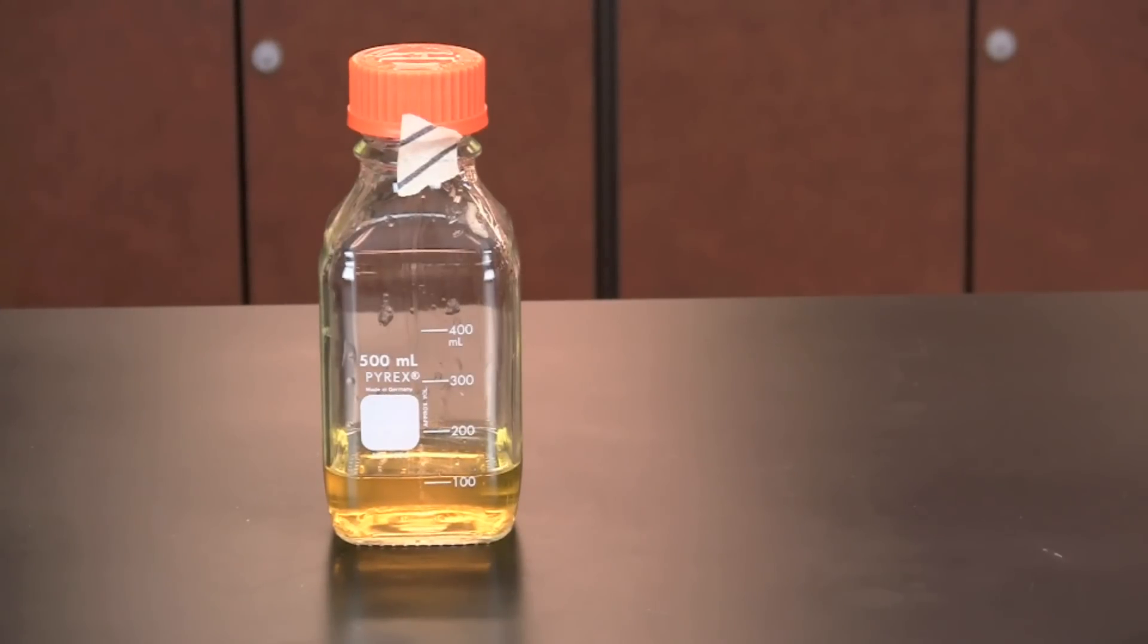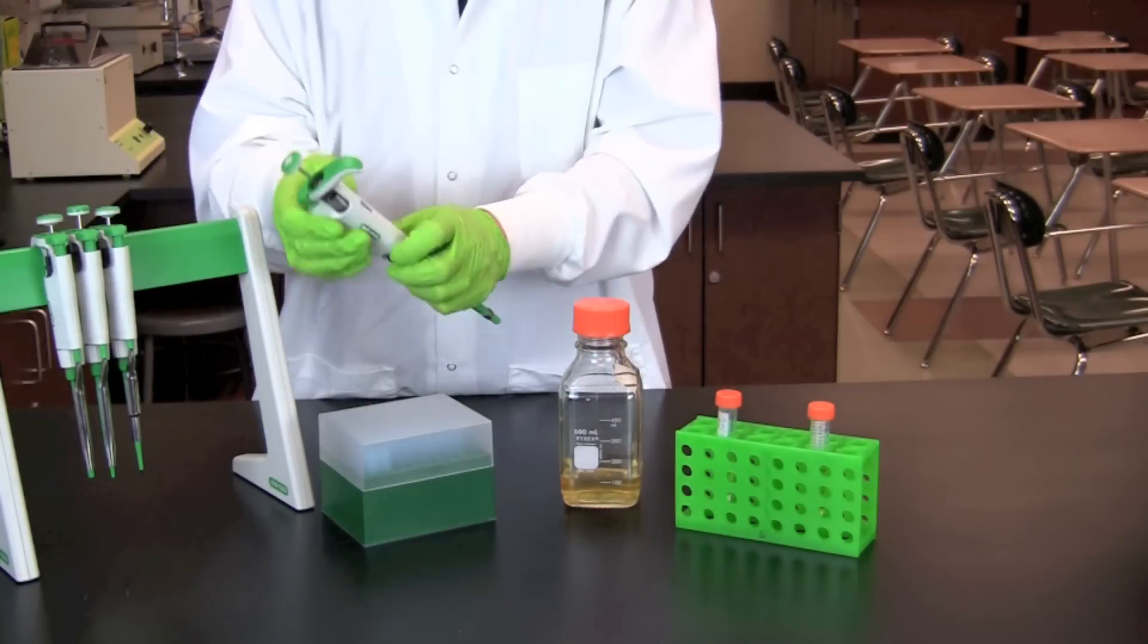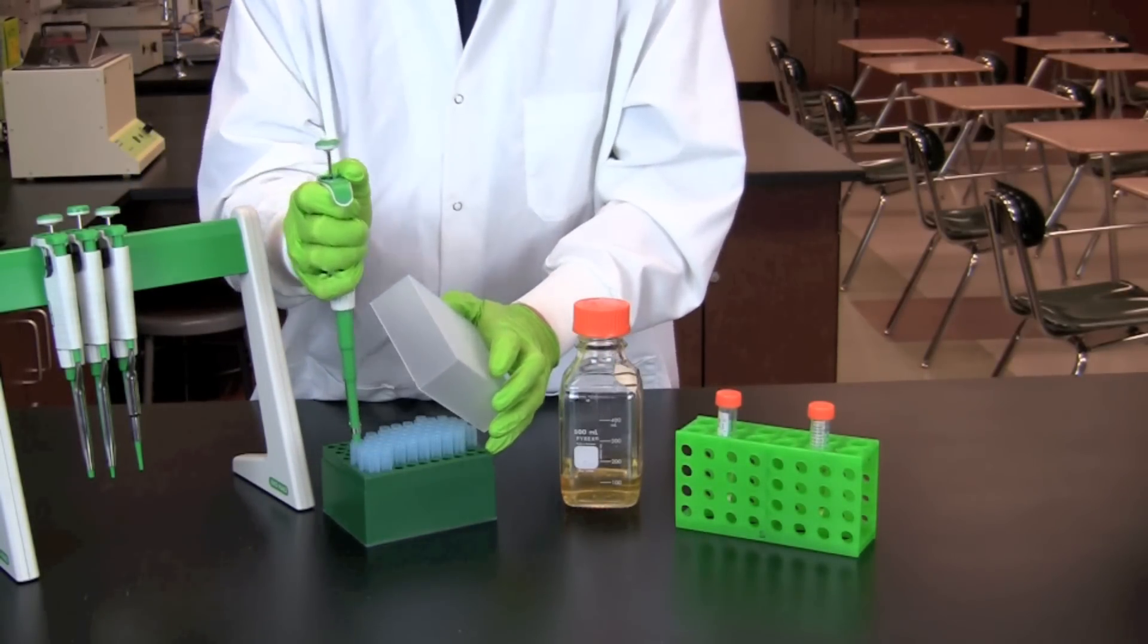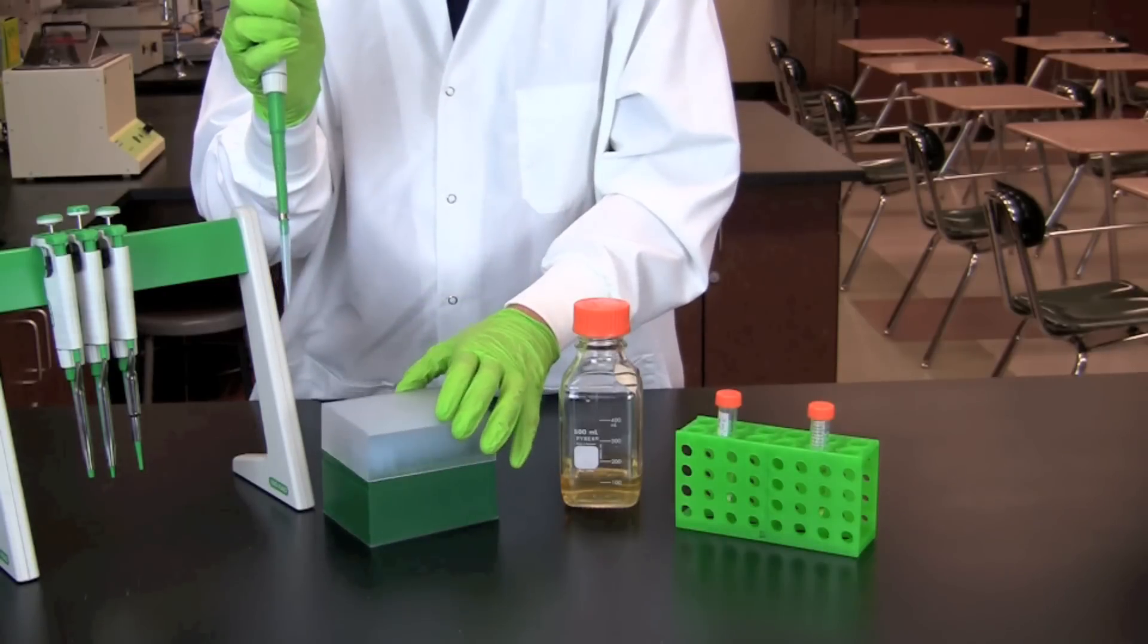After taking the media out of the autoclave, allow the media to cool to 55 degrees Celsius prior to adding ampicillin. Ampicillin is destroyed at temperatures above 60 degrees Celsius. Set your pipette for the volume of antibiotic prescribed in your lab protocol and transfer that volume to your media.